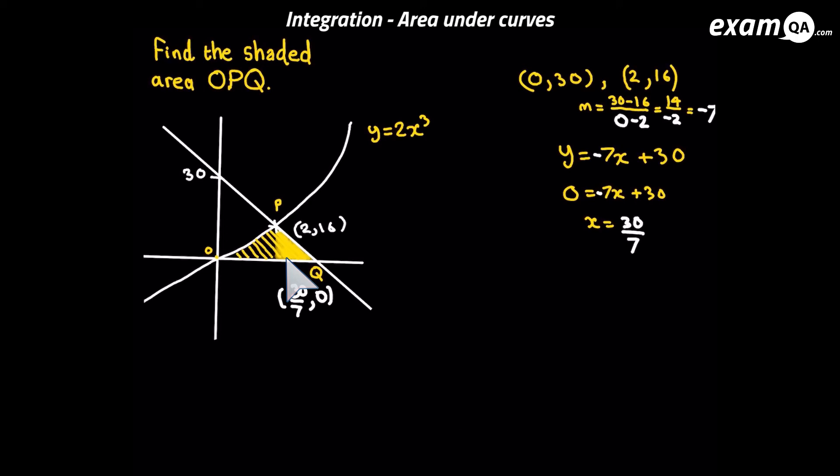For area of a triangle, we've done half base times height. What is the length of the base? We just look at the x-coordinate of p and the x-coordinate of q. Subtracting them gives us how long the base is, simply 16 over 7. The height of this triangle is simply the y-coordinate of p, which is 16. And we get our answer, 128 over 7.